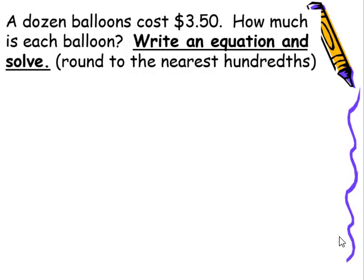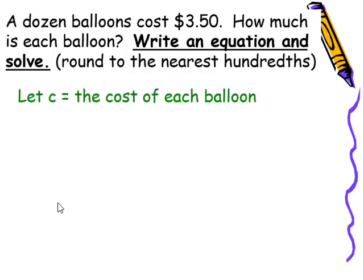We want to write an equation and solve, round to the nearest hundredths. When solving the equation, the first thing we want to do is identify the unknown variable. In this particular case, we can see it says how much is each balloon. I'll say let c equal the cost of each balloon. I chose to use c because it said how much, and that's the cost.